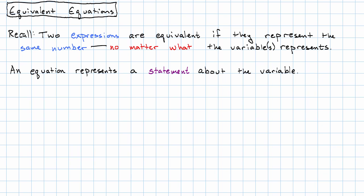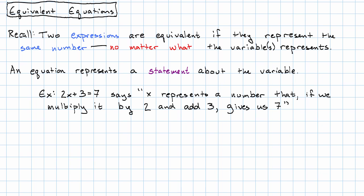An equation tells us that our variable x has some property. For example, the equation 2x plus 3 equals 7 makes the statement: x represents a number that if we multiply it by 2 and add 3 gives 7.